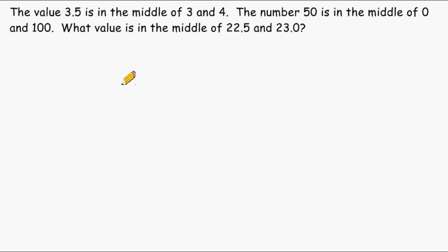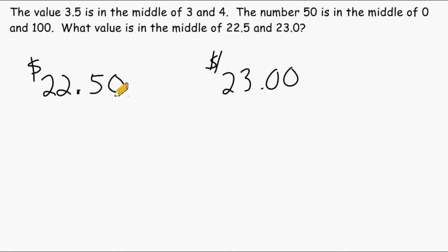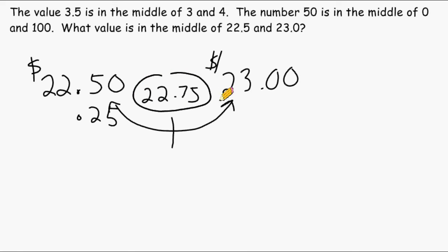Another way that we can approach this problem is by writing 22.5 as a dollar amount. Let's just pretend that we have 22 dollars and 50 cents, and write 23 as 23 dollars. If we look at these two values as dollar amounts, we have 22 dollars and 50 cents and 23 dollars, and we should be able to notice that these two values are 50 cents away from each other. But we want half the distance, and half of 50 cents is 25 cents. So if we just add 1 quarter, or 0.25, to 22.50, that would give us 22 dollars and 75 cents. So that is another strategy that we can use to figure out what is in the middle of two given numbers.